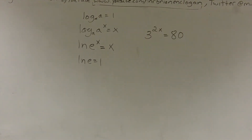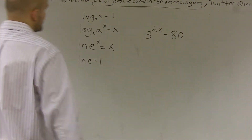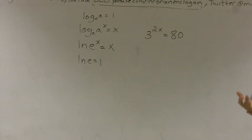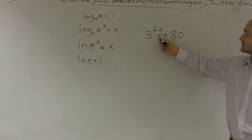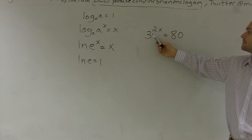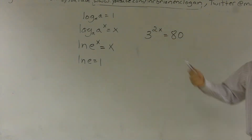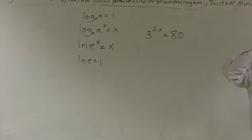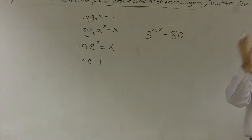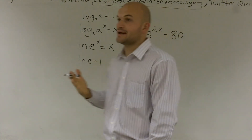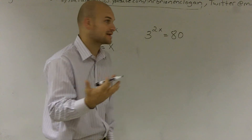When solving a problem like this, we see we have an issue. What we have is our base 3 raised to the exponent of 2x. So we have an x as our exponent, and we need somehow to get it out of being an exponent so we can learn how to solve it.